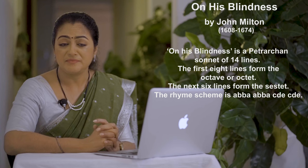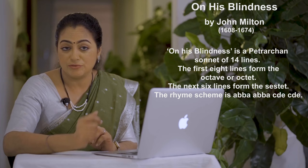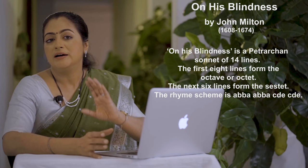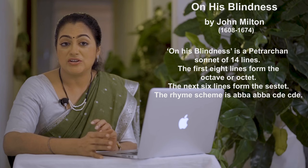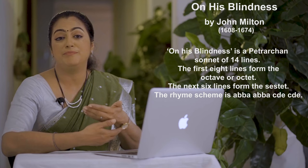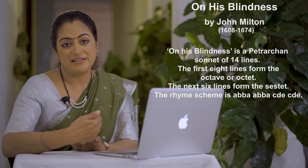A Petrarchan sonnet has 14 lines and is divided structurally into an octave of eight lines followed by a sestet of six lines. Usually, some issue or problem is presented in the octave and then in the sestet a solution or resolution is found. This poem follows the same pattern, with the rhyme scheme ABBAABBA for the octave and CDECDE for the sestet.